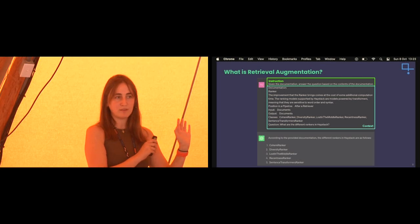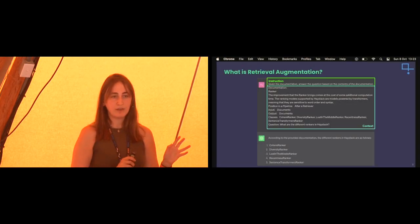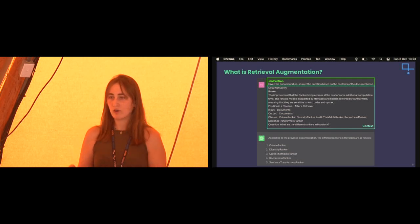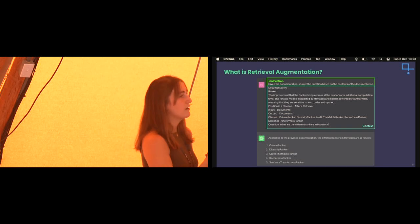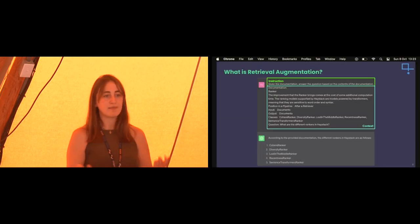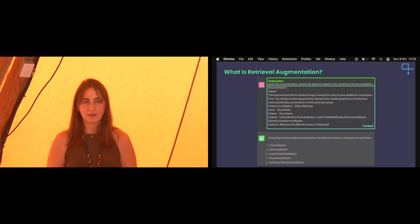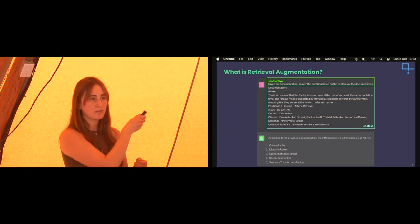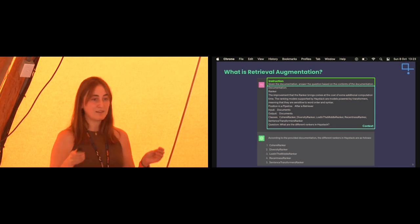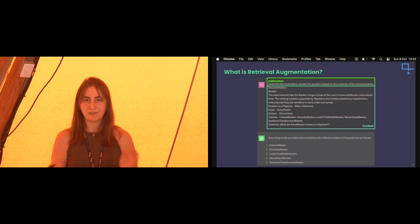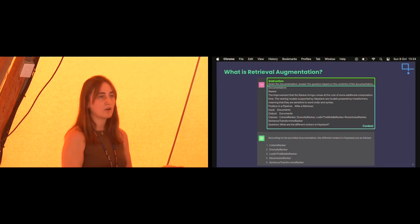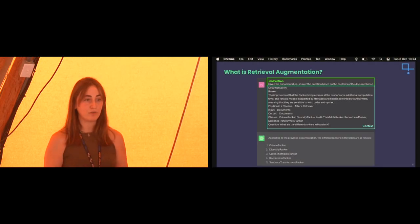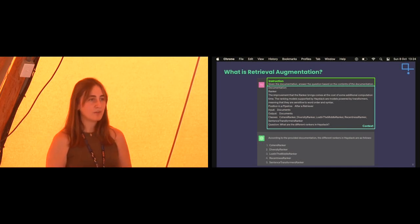What you're seeing here is what retrieval augmented generation is trying to achieve. I changed my query — it's not just a question, it's an instruction: 'Given the documentation, answer the following query.' I copy-pasted the beginning of that documentation page, then followed it up with the query about rankers. Getting that right context, maybe even pre-processing it and putting it in the right format, isn't as simple as it seems. Retrieval augmentation is about finding the right context given the query and giving it to the LLM in a way it can actually use.